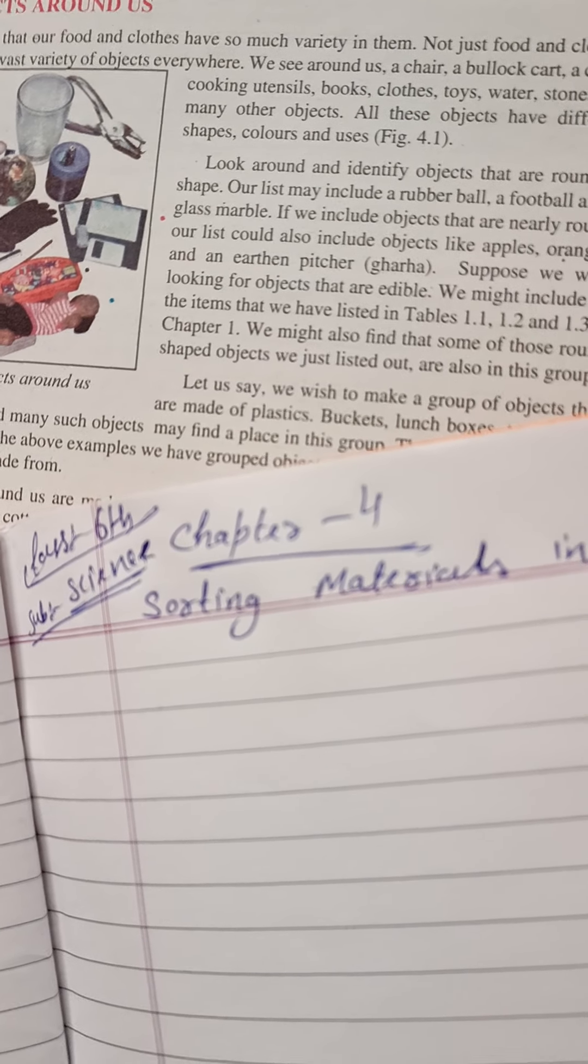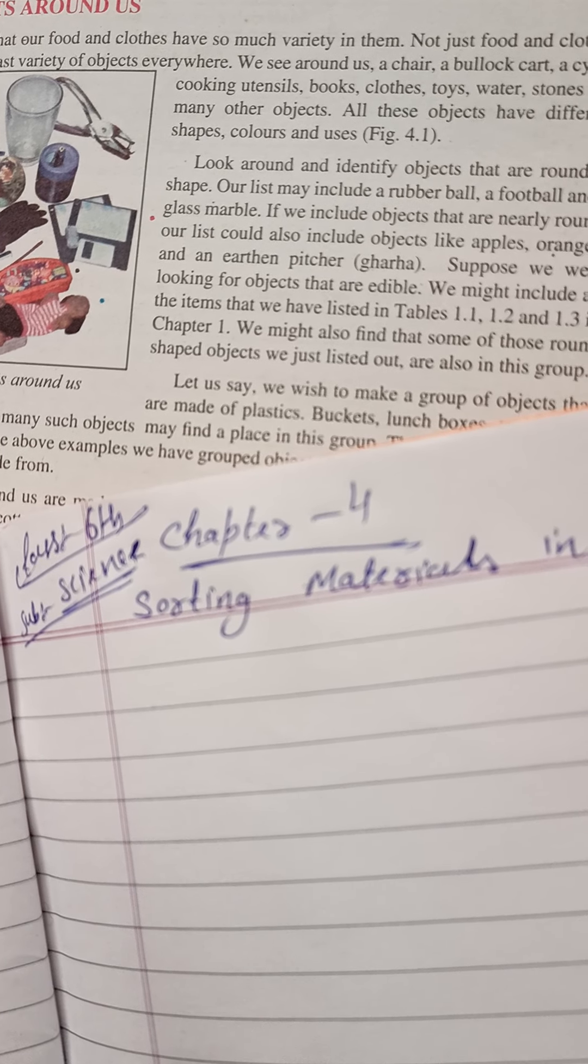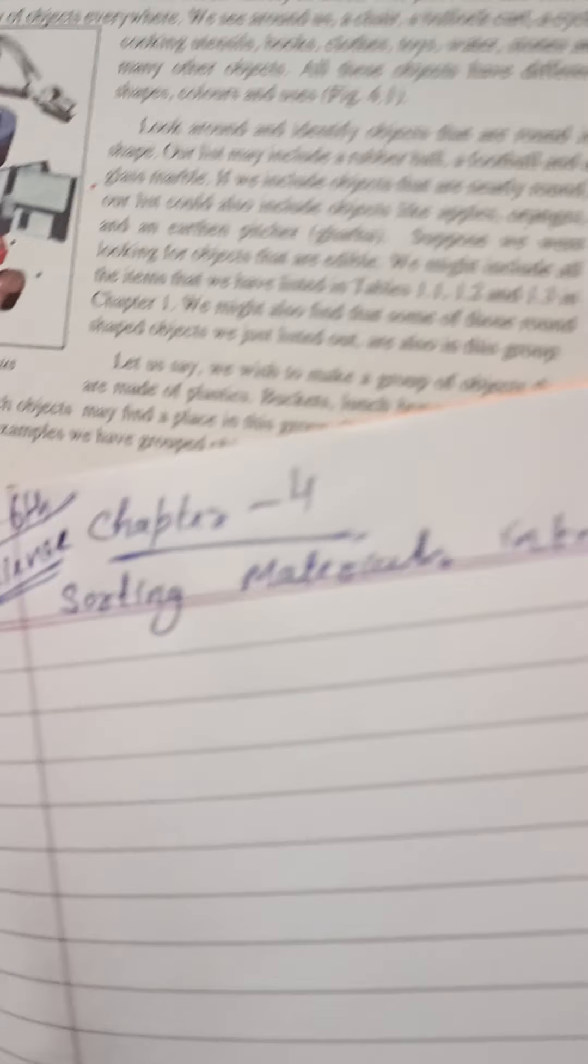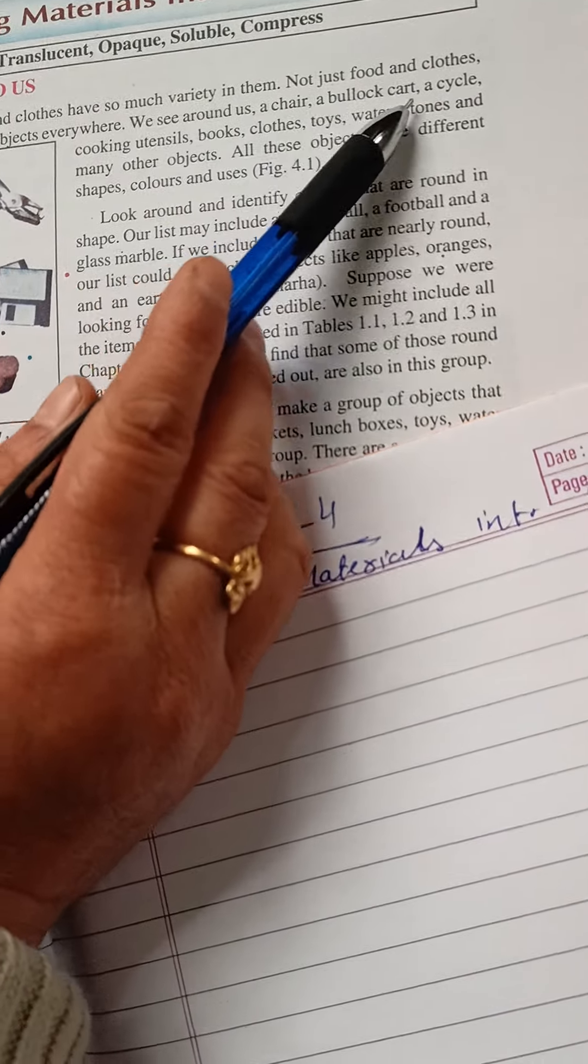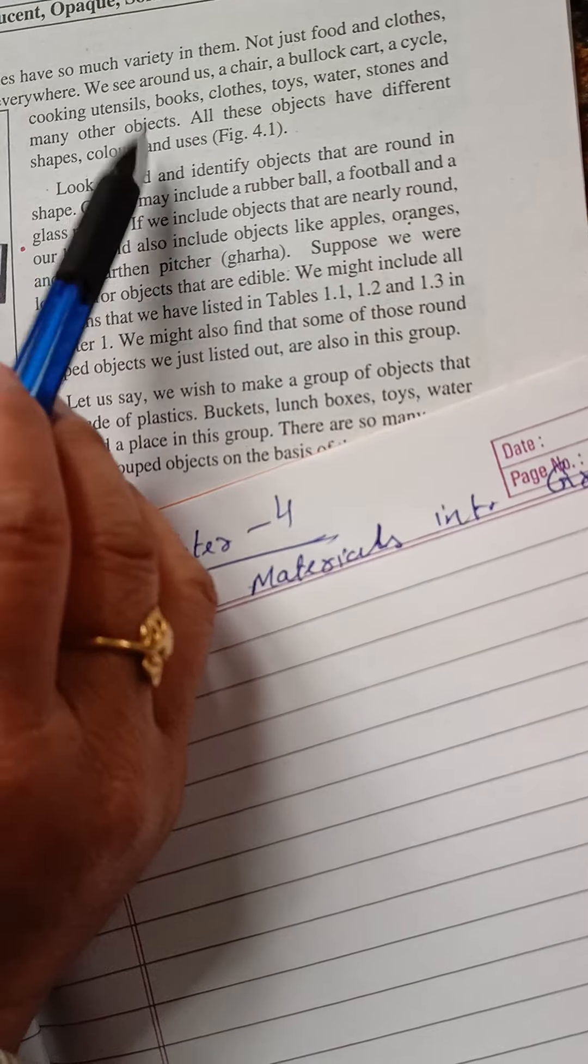We see around us a chair, a blackboard, a cycle, cooking utensils, books, clothes, toys, stones, and many other objects.